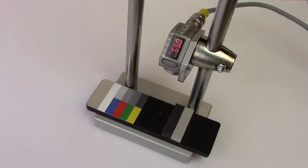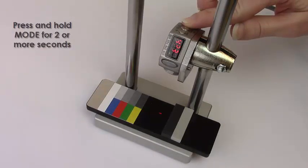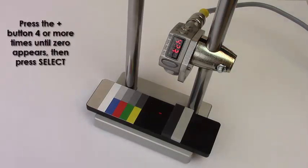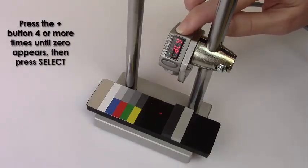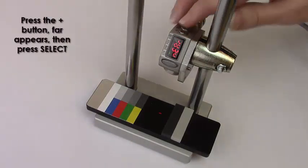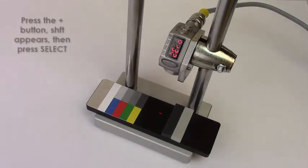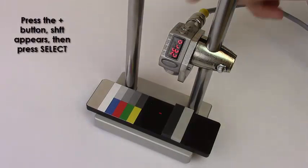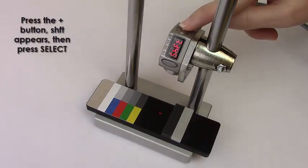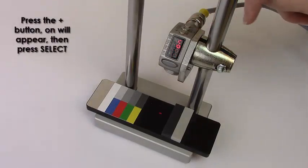The current distance is 55 millimeters. Press and hold mode for two or more seconds. Press the plus button four or more times until zero appears, then press select. Press the plus button, bar appears, then press select. Press the plus button and shift appears, then press select. Press the plus button, on will appear, then press select.